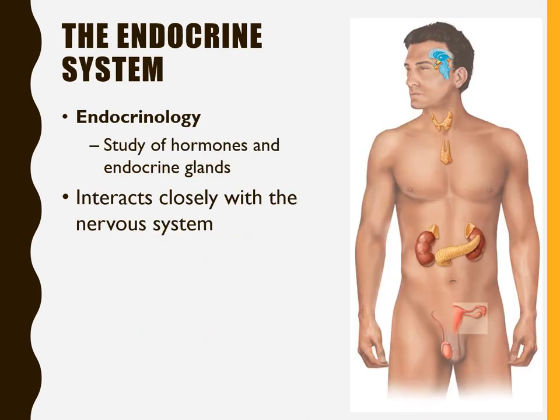When we talk about the endocrine system, we're studying hormones and the endocrine glands — that's called endocrinology. It interacts very closely with the nervous system, which is why it's included in this unit. The nervous system ultimately has the majority of control over the endocrine system, but both are control systems of the body that control a lot of different internal systems.